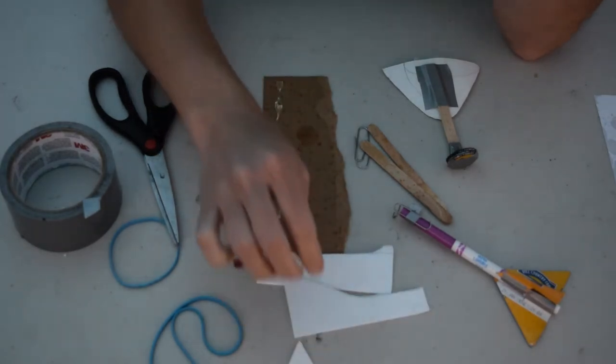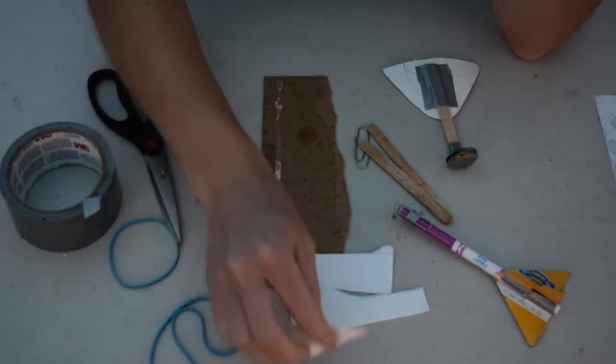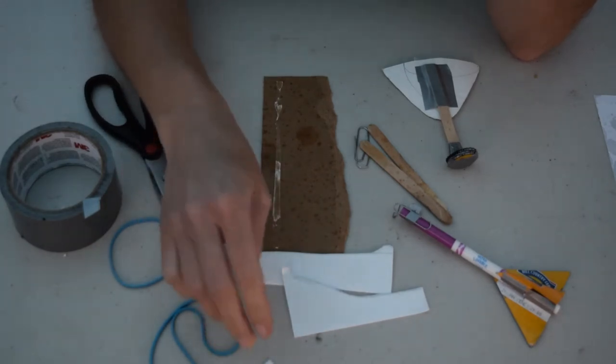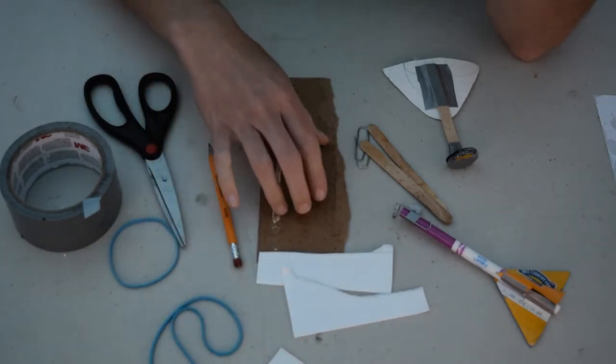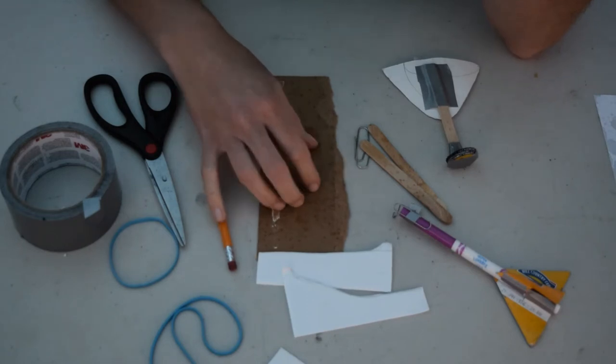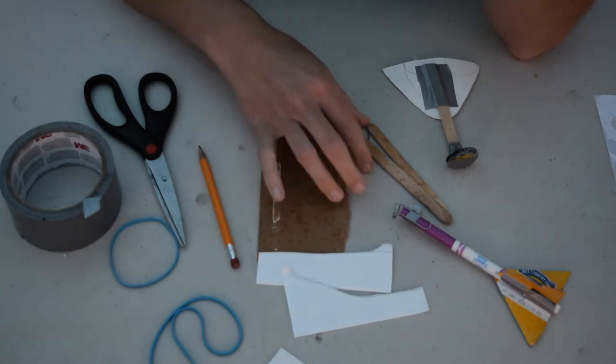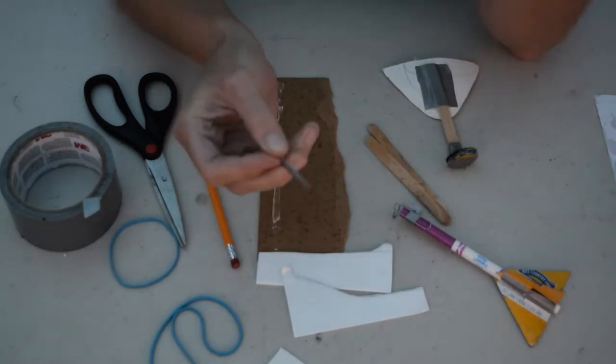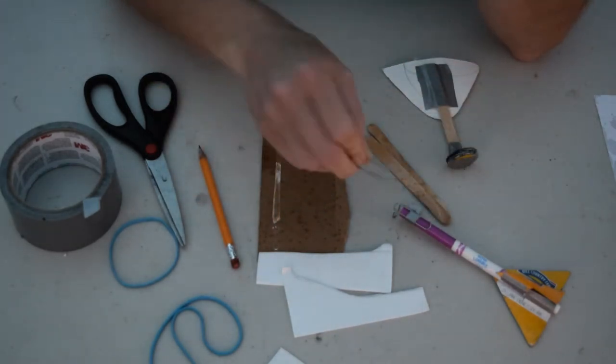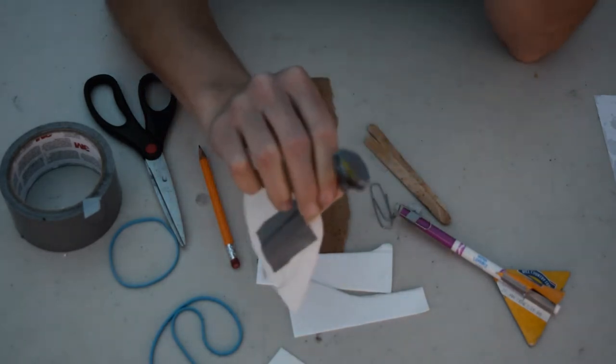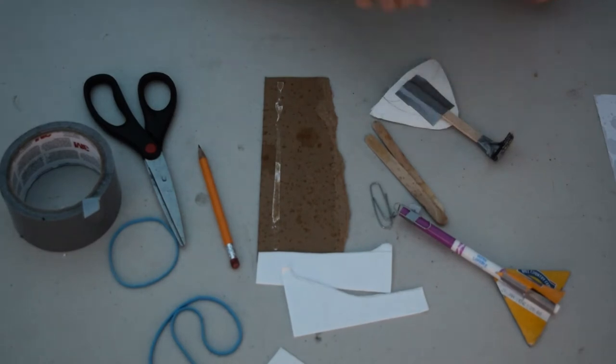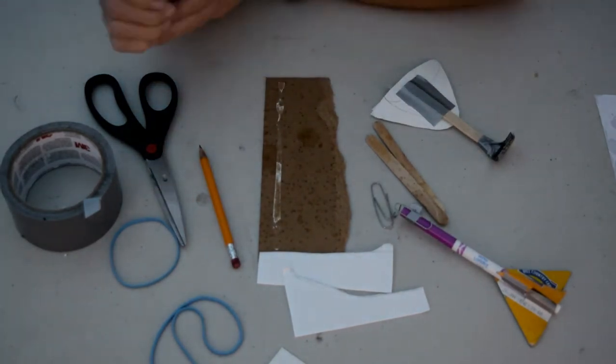You're also going to need something that is kind of sturdy like poster board type of material. Something a little bit heavier than regular paper. Cardboard cereal boxes are really perfect for this. And you're going to need something to create a hook at the front of the rocket. I found that paper clips have been my best option, but I also did use a bottle cap in this iteration. So yeah, let's go ahead and get started with our design process.